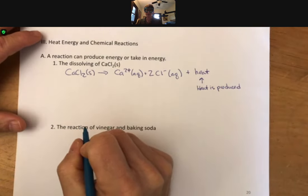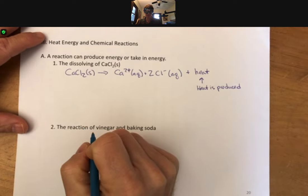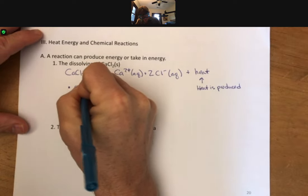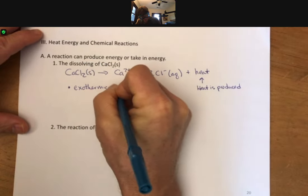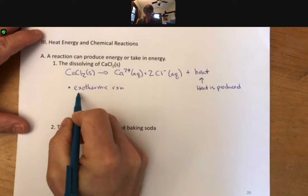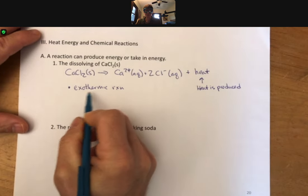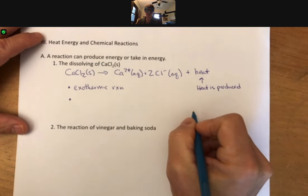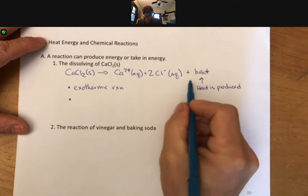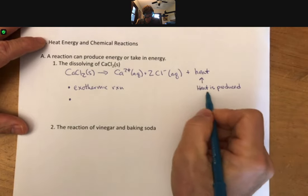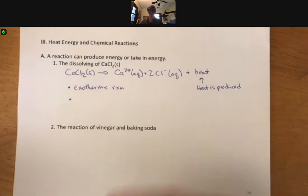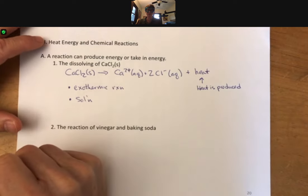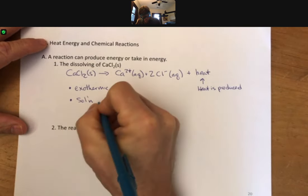Some other terminology that we have: when heat is produced by a reaction, the reaction is an exothermic reaction. Exo means exit, therm means heat. Heat is exiting the reaction. Since heat is coming out of the reaction, heat is produced, it is being taken in by the solution. The solution heats up.